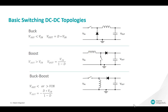Here are the three basic switching DC-DC converter topologies. By rearranging the switching elements and the LC filter, we can get either a buck or step-down converter, where VOUT is lower than VIN. For the buck converter, VOUT equals VIN times the duty cycle. The boost converter has VOUT greater than VIN. The buck-boost converter can have the output voltage either higher or lower than the input voltage, and the output can also be inverted, being negative relative to the input voltage.